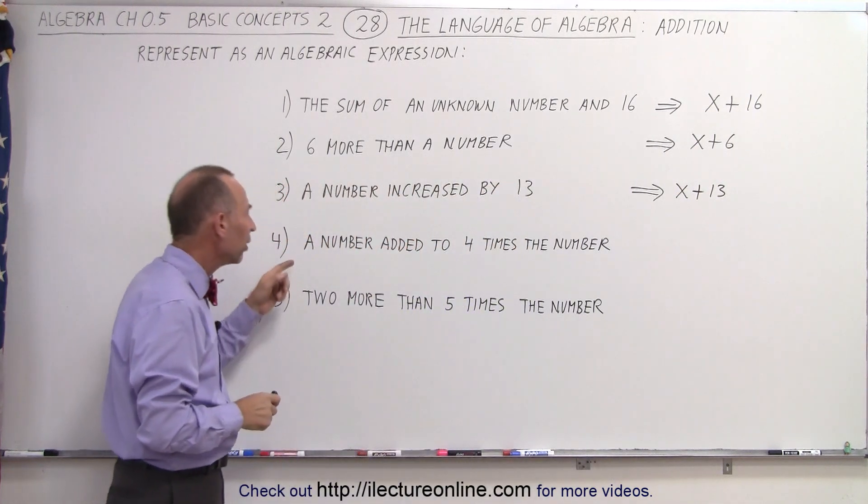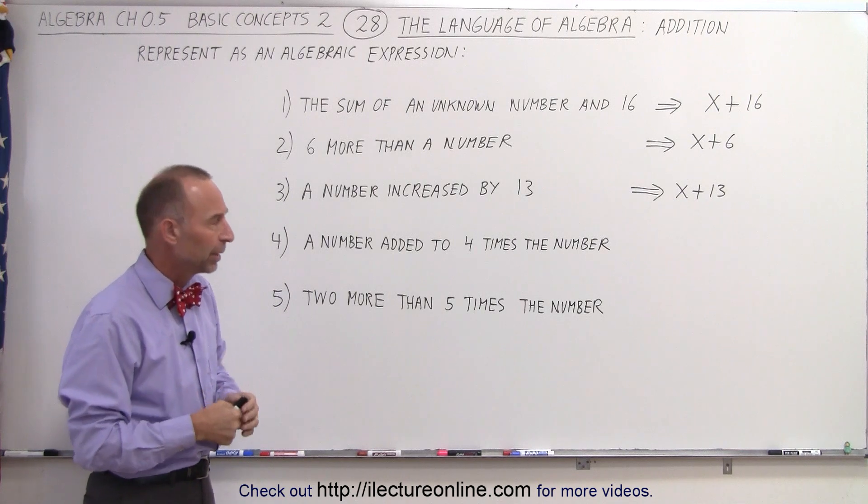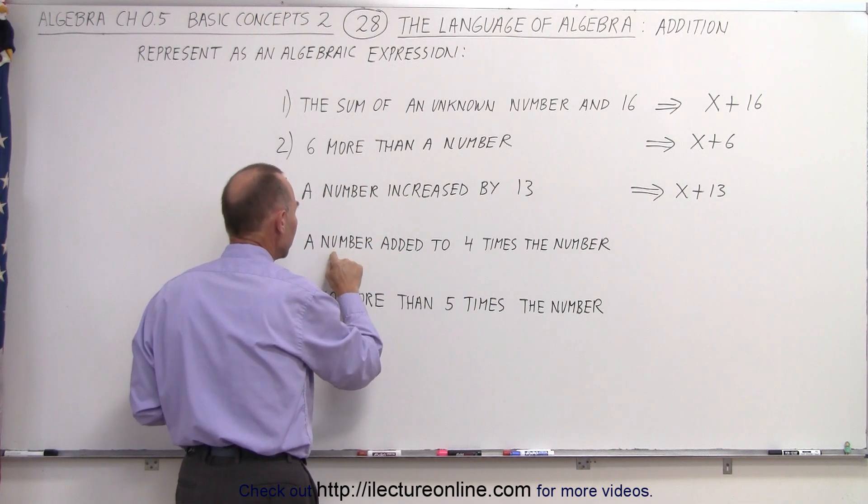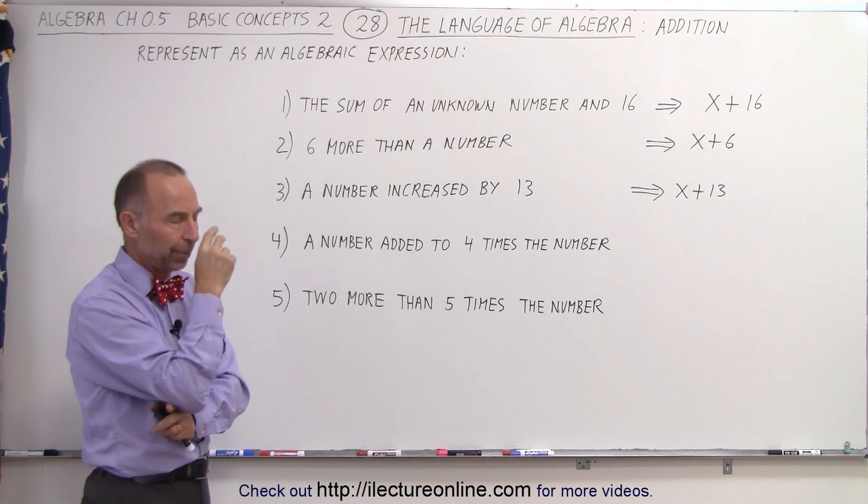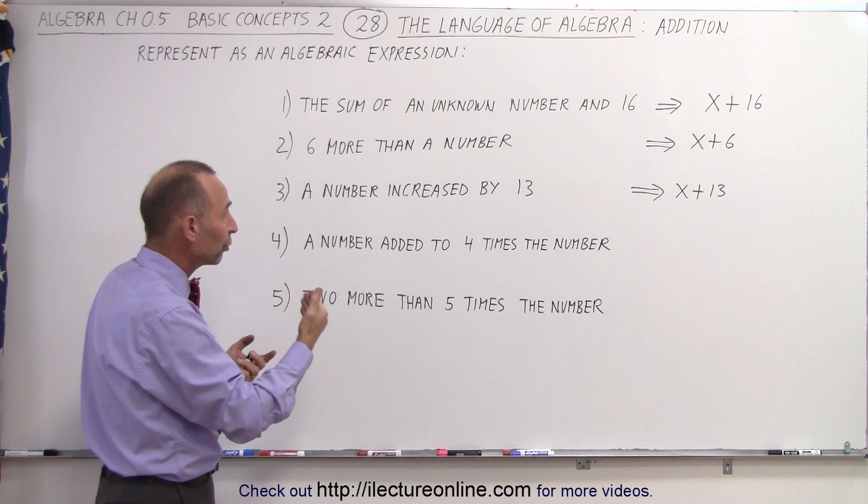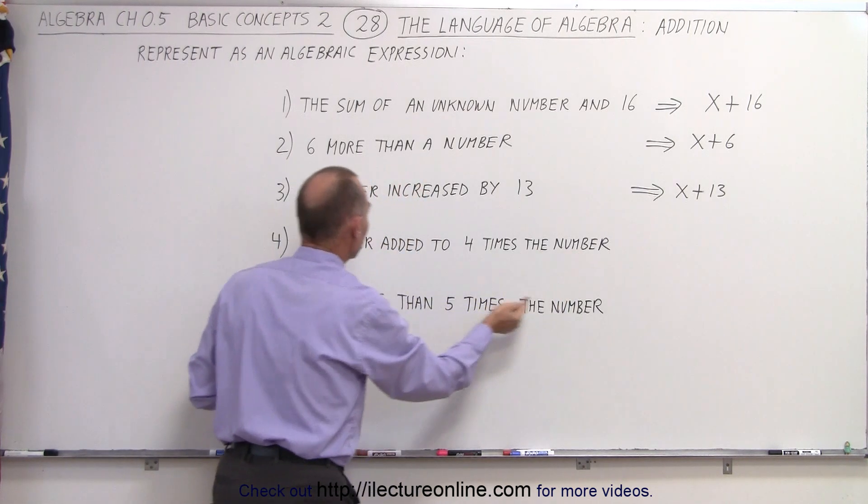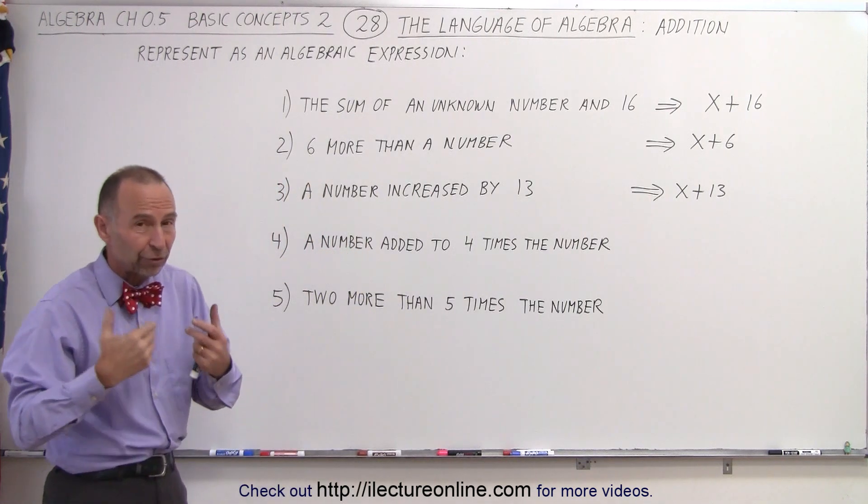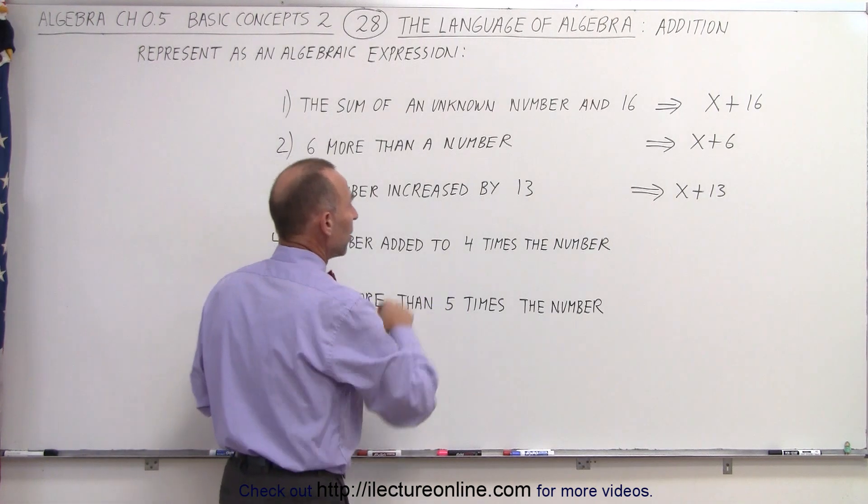The next statement says, a number added to four times the number. So we have a number, then we take four times that number, and then we add a number to that. Are those the same number? If they are the same number, a number added to four times the number, the word the implies that this number must be the same as that number. So if that's what's implied, then we look for keywords to help us figure that out. Then we can say, we take the number x.